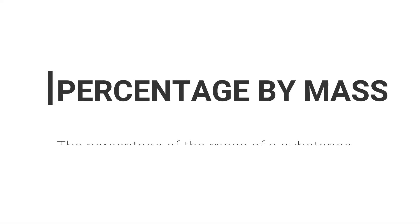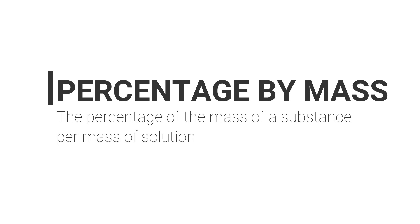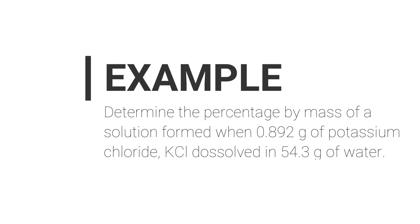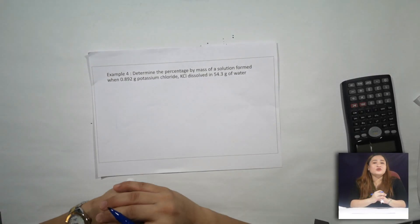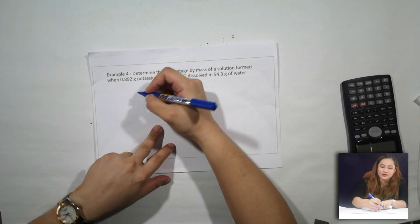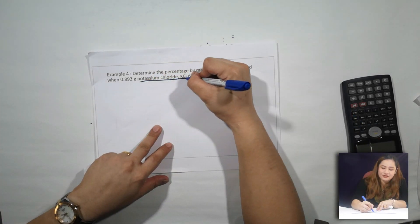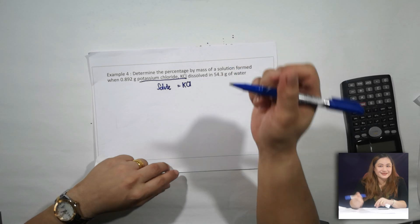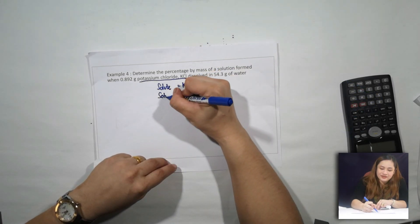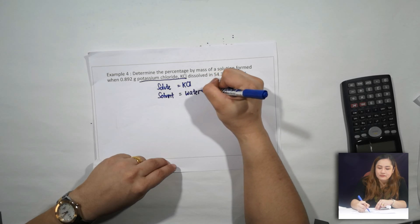Percentage by mass is defined as the percentage of the mass of a substance per mass of solution. Determine the percentage by mass of a solution formed when 0.892 grams of potassium chloride dissolves in 54.3 grams of water. Which one is your solute and which one is your solvent? Your solute will be potassium chloride, and your solvent will be water.